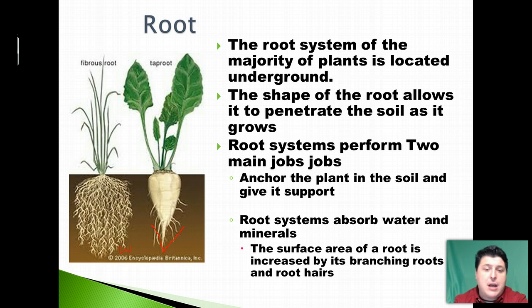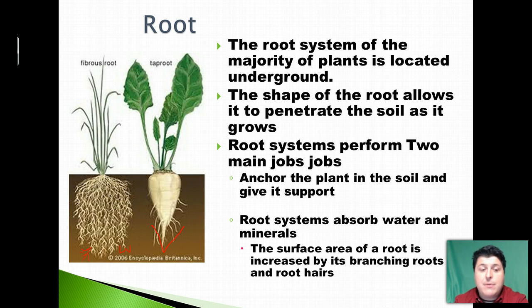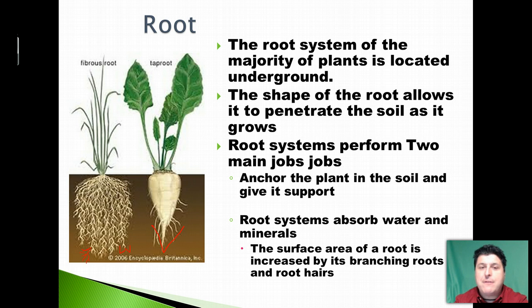Many roots are able to increase their surface area by branching and having lots of little tiny root hairs at the end. Some roots actually form a symbiotic relationship with fungi to further increase that surface area and allow for additional absorption of nutrients.